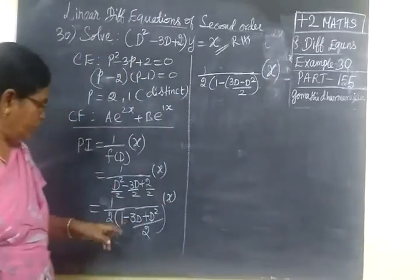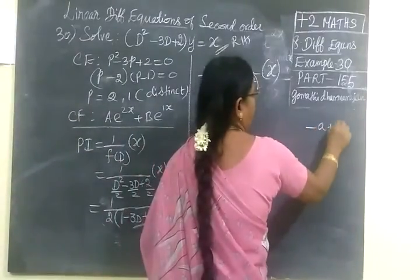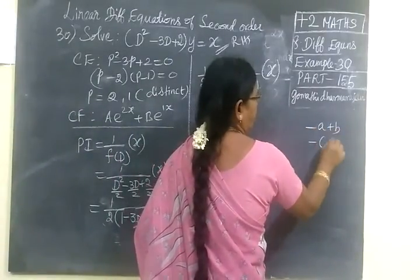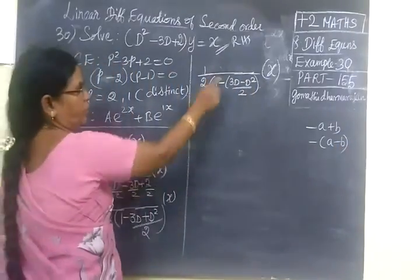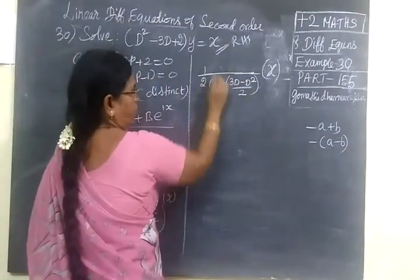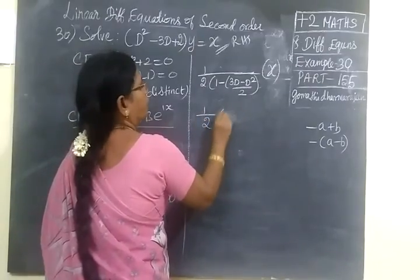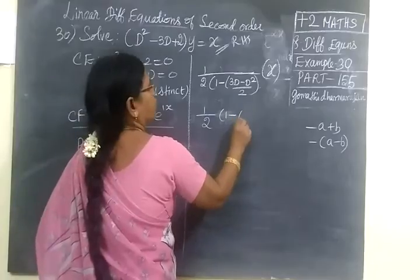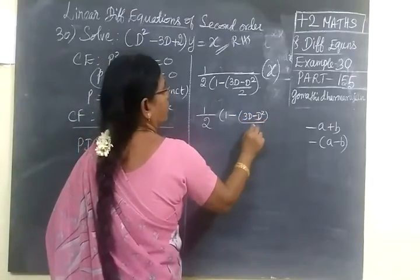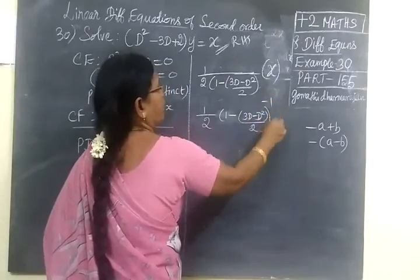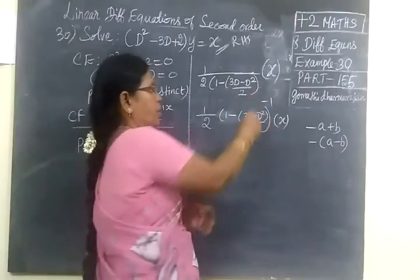You are taking minus outside. If you take minus outside, you can write it as A minus B. In this way we have written. Now you take it to the numerator: 1 by 2, then 1 minus (3D minus D squared) whole by 2, whole power minus 1.